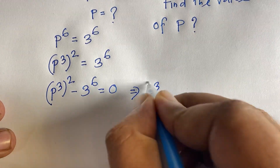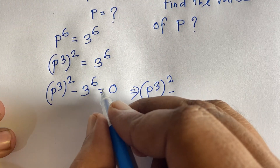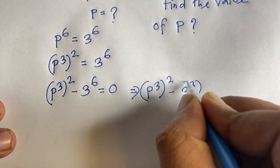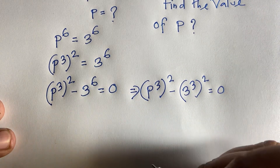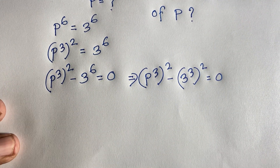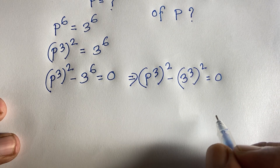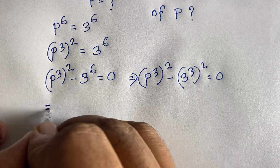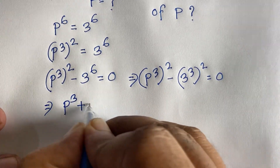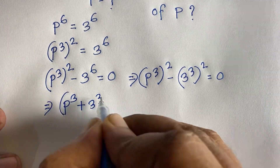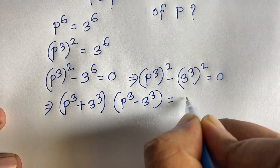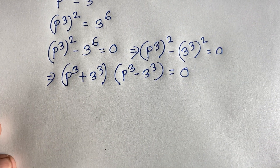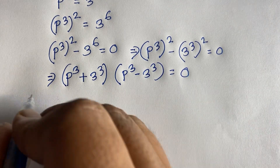Now we have (p³)² minus (3³)² equals 0. Using the difference of squares law — a² minus b² equals (a + b)(a − b) — this expression becomes (p³ + 3³)(p³ − 3³) equals 0.